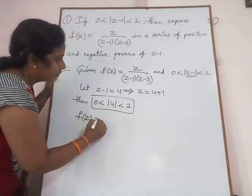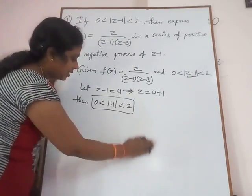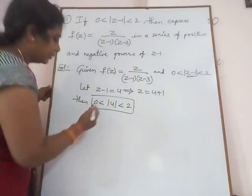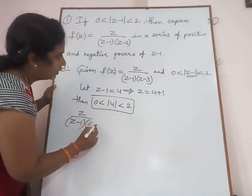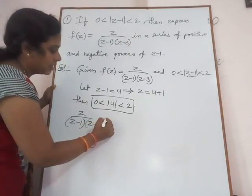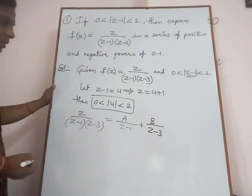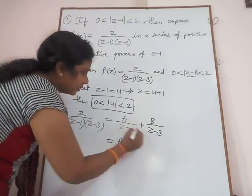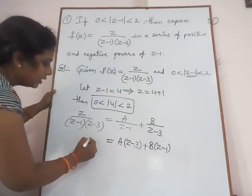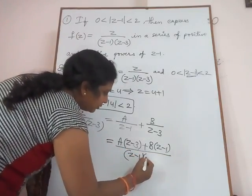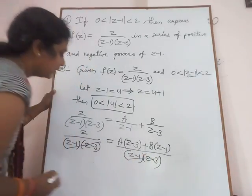Given f(z) = z / ((z-1)(z-3)). The right-side function can be split into factors and by using partial fractions we can find the separate terms. So z / ((z-1)(z-3)) = A/(z-1) + B/(z-3). Taking LCM: A(z-3) + B(z-1). Here z / ((z-1)(z-3)) equals z / ((z-1)(z-3)) and the denominator terms get cancelled.